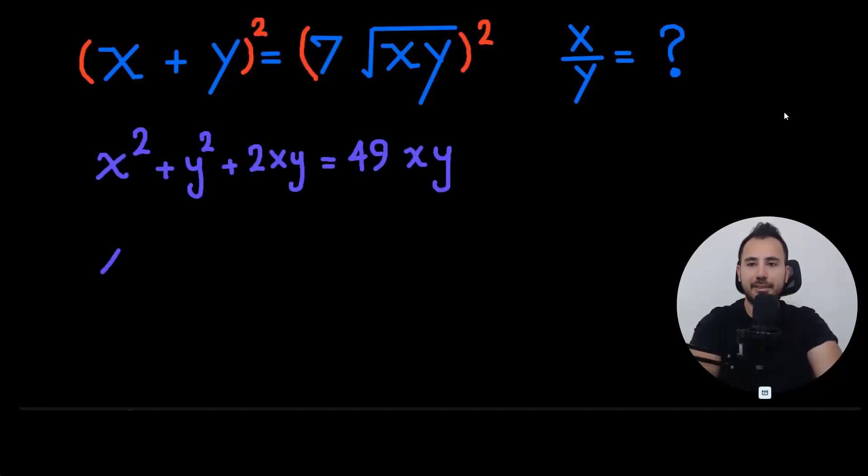Let's have everything on the left side. We're going to get x squared plus y squared minus 47xy is equal to 0.